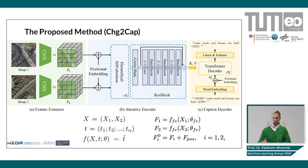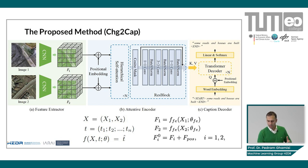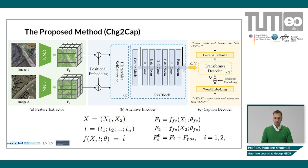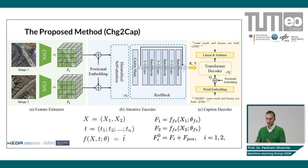The input to this network is X1 and X2, or image one and image two. In the feature extractor part, we use the same networks to extract features from both images, with parameter sharing between the two networks — using the same parameters theta_FE. By keeping everything similar, we can hopefully extract features which highlight the changes between image one and image two.